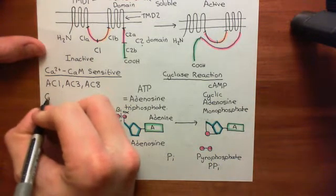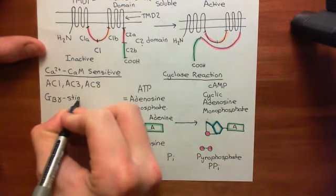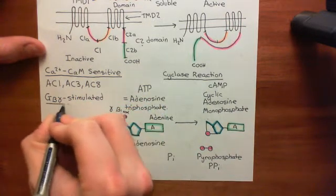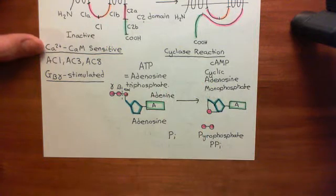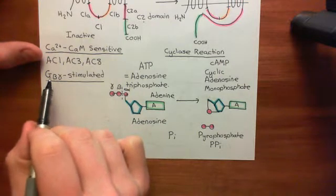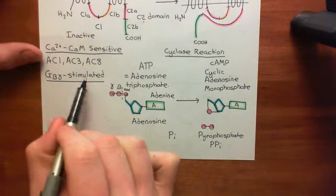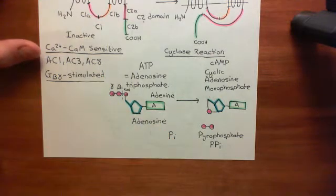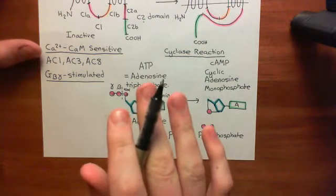The next family is known as the G-beta-gamma-stimulative family. This is a little bit more interesting as far as the adenylyl cyclase protein kinase A pathway is concerned. The adenylyl cyclases in this family are not activated by G-beta-gamma complexes, at least not alone. However, G-alpha-S-GTP subunits can activate all nine of the membrane-bound adenylyl cyclases.